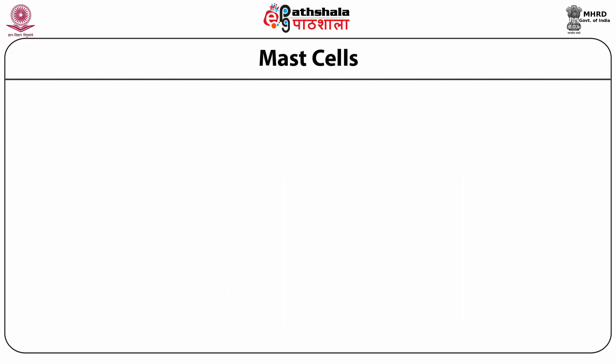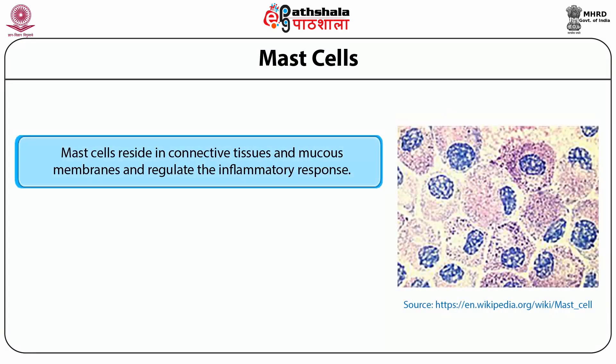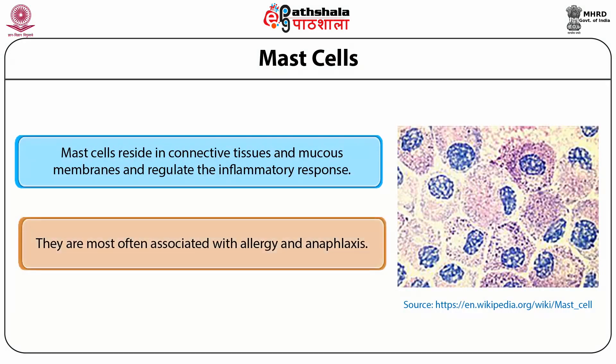Mast cells reside in connective tissues and mucous membranes and regulate the inflammatory response. They are most often associated with allergy and anaphylaxis. When there is a degranulation of mast cells it leads to allergic reactions. Degranulation of mast cells occurs when the body is exposed to allergens, so mast cells are activated in case of allergic reactions.